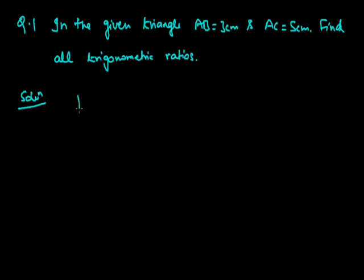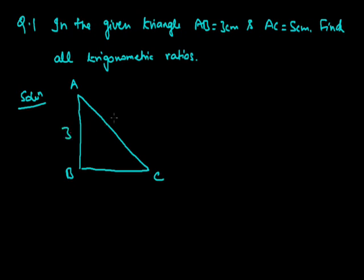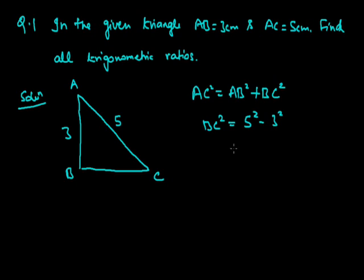Definitely this triangle should be a right angle triangle because we only deal with the right angle triangle in trigonometry. In this, AB is given as 3 and AC is given as 5. Accordingly, first we will find out BC. For finding BC, we will use Pythagoras theorem: AC² = AB² + BC². So BC² = 5² − 3² = 25 − 9 = 16, and BC = √16 = 4 cm.